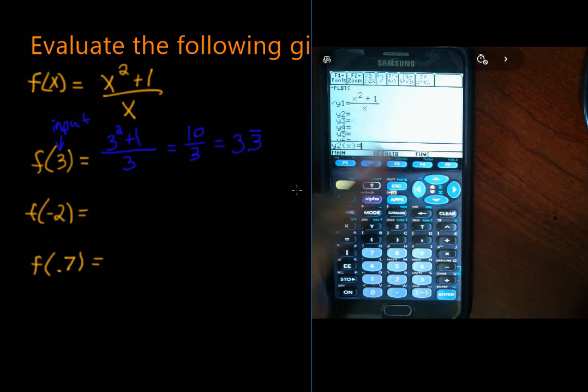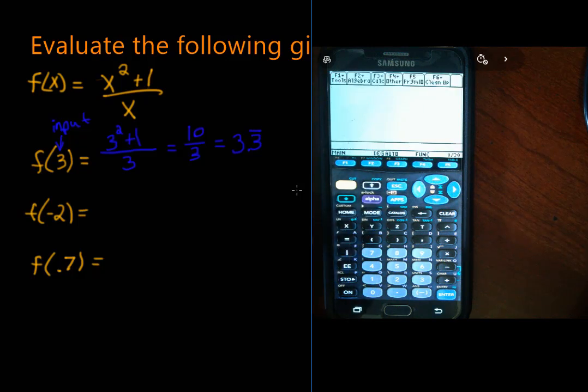Now we want to get out of this function editing thing. What we're going to do is we're going to hit the second button, that's that bright yellow one. And where it says escape, we're going to hit that to get back to our home screen. Once we're back in our home screen, we want to figure out what f(3) is. So remember, our function in our calculator, it's not called f, it's called y1. So you're going to hit the y button, and then you're going to hit the 1. And what do we want to input into this? Well, we wanted our input to be 3. So we're going to hit parenthesis, 3, and parenthesis. So what is y1, or f, of 3? So let's figure it out. Let's hit enter. And we get 10 thirds. That's awesome. That's what we wanted.